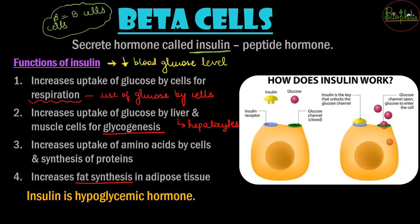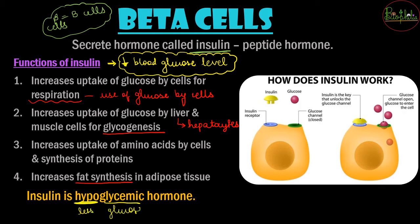All these functions together give insulin its major role: to decrease the blood glucose level. Since the hormone decreases glucose levels, it is called a hypoglycemic hormone. Hypo means less, and glycemic is related to glucose, so insulin — which lowers blood glucose — is the hypoglycemic hormone.